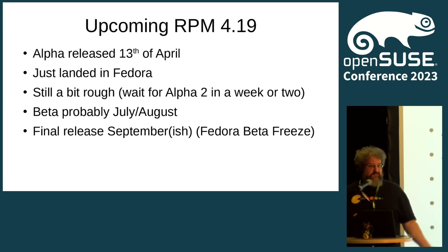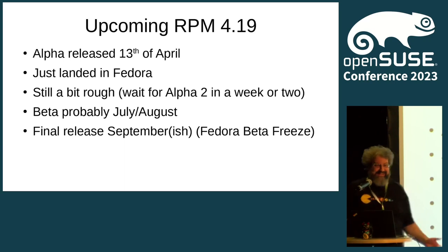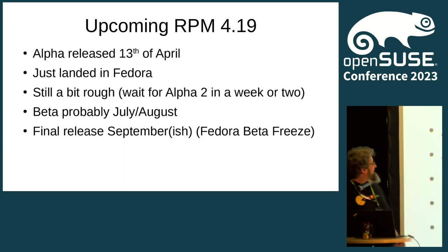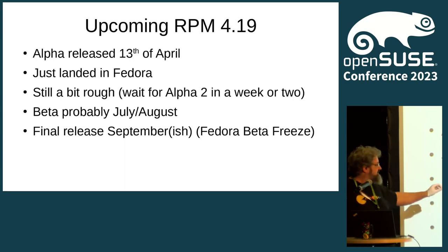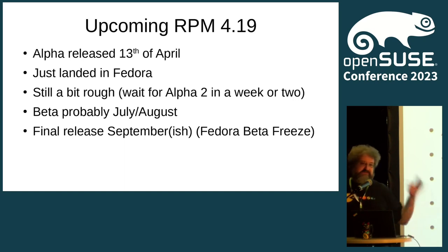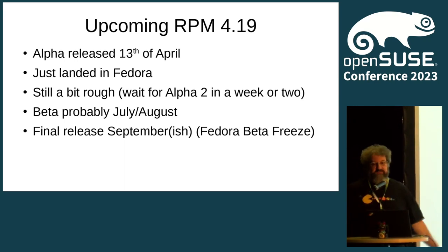Our releases, for those who don't know, are synced up with Fedora. Fedora is not actually a distribution — it's the test bed for RPM. It just landed in Fedora, and it turns out it's still a little bit rough at the edges and in the middle and on all other sides too. So if you're interested, probably wait another week or two — we will do another alpha soonish. The release cycle follows the Fedora release, basically the summer or autumn Fedora release. We will probably release a beta in summer, July/August-ish, and we'll try to have the final release done for September, more or less.